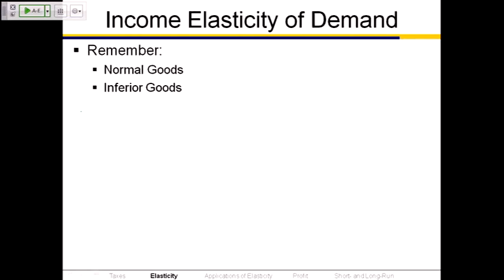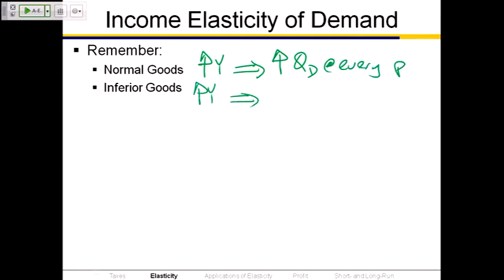Income elasticity of demand — remember the definitions of normal and inferior goods. With a normal good, if there's an increase in income, we buy more: there's an increase in quantity demanded at every price. With an inferior good, if there's an increase in income, we buy less: there's a decrease in quantity demanded at every price. So the income elasticity of demand first tells us whether we're looking at a normal good or an inferior good. With a normal good, as income goes up, quantity demanded goes up, so that ratio is positive. With an inferior good, it's going to be negative.